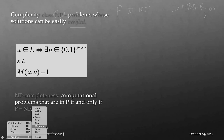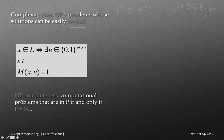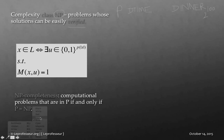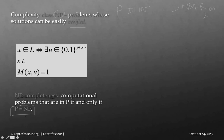This boils down to NP completeness. The class of problems in P, if and only if P equals NP, then by definition we talk about NP completeness. And whether P equals NP or not is apparently an open question — a million dollar question.